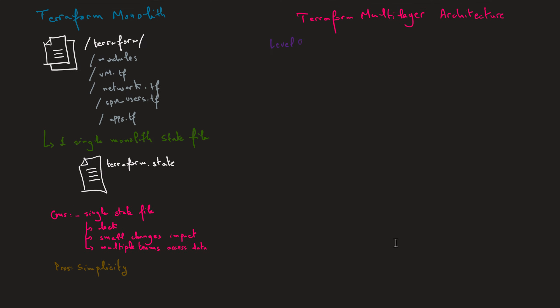Let's now see another architecture without these disadvantages. When talking about monolithic, that reminds us of another domain with the same problem — software design. In software design, we can have one single application that does everything, and to enable that application to scale, we invented microservices. Each microservice is responsible for only one single thing inside the application, and those microservices can talk to each other. We'll apply the same principle for Terraform configuration files, and we'll call it Terraform multi-layer architecture.